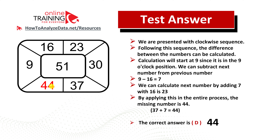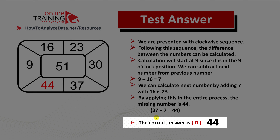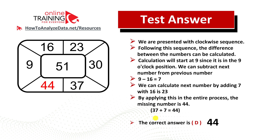Let's reaffirm that our calculation is correct by adding 7 to 44: 44 plus 7 is 51, which is the next number in the center. So the correct answer here is choice D, 44. Hopefully you answered this question correctly. In case you need more questions or practice problems, please check out my ebook in the description of this video.